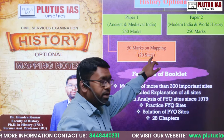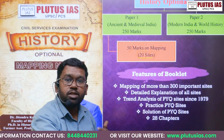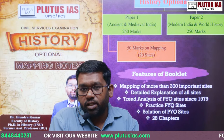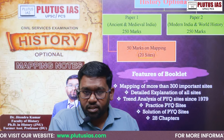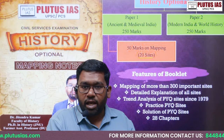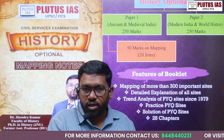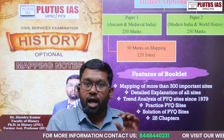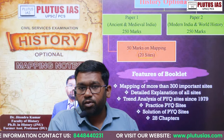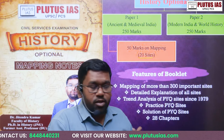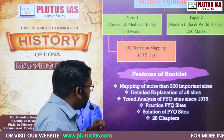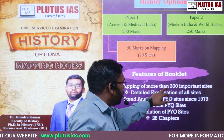There is one question in which 20 sites have been included on the map of India. Students are expected to identify those 20 sites given on the map of the Indian subcontinent, and after identifying them, they are expected to write about 30 words on each site.